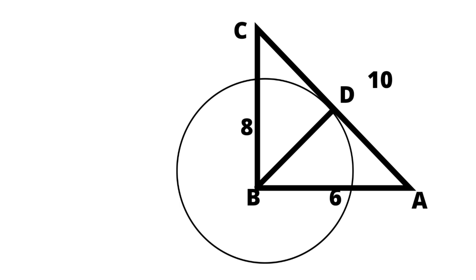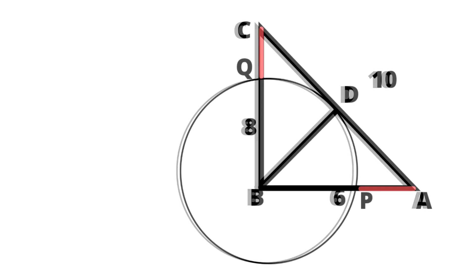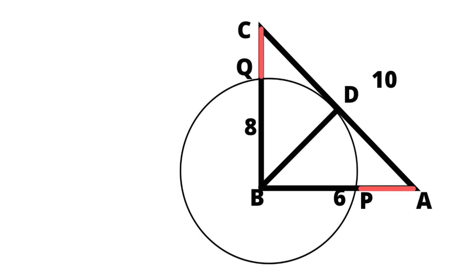A perpendicular dropped from B meets the side AC at D. A circle of radius BD is drawn. If the circle cuts AB and BC at P and Q respectively, what is the ratio of line segments AP and QC?